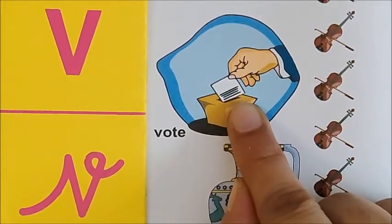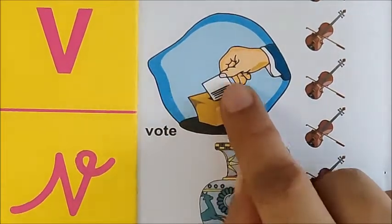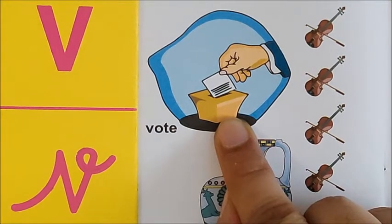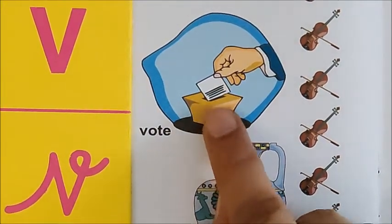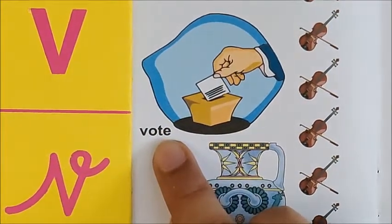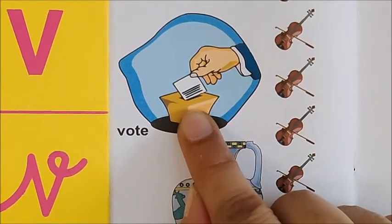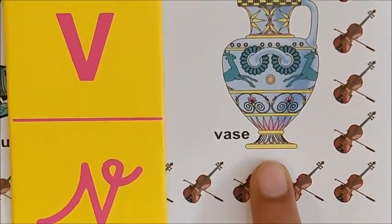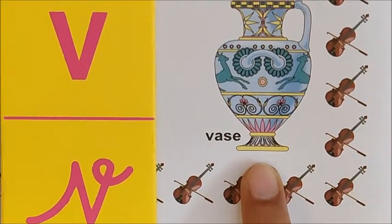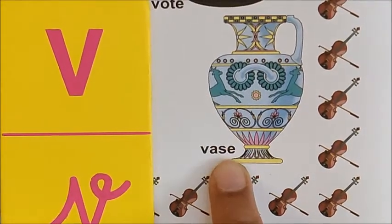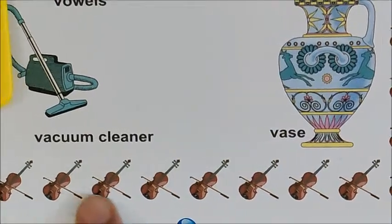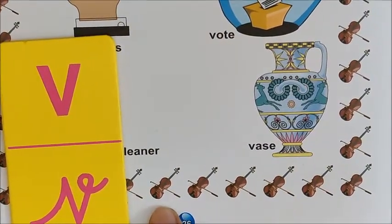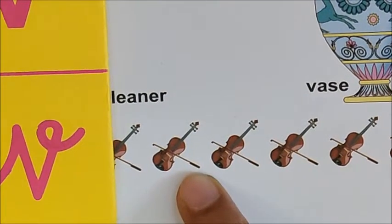We write the name of the person whom we want to select, and we put our vote — this paper — inside a box. Then these papers are counted, and the person who gets many votes gets elected. So this is called V for vote. Ask your mama or papa to explain you the meaning of vote in detail. Now let us go to the next picture — V for vase. In the vase, we put flowers and we decorate our house. Now look at the border — V for violin. This is a violin, and to play a violin, children, you need this stick to play it.